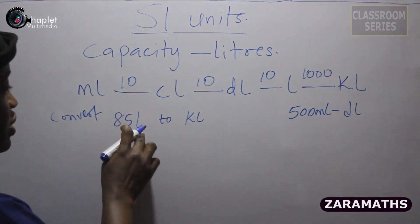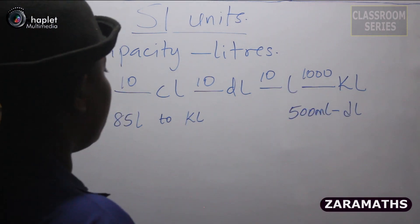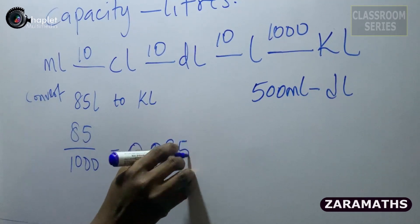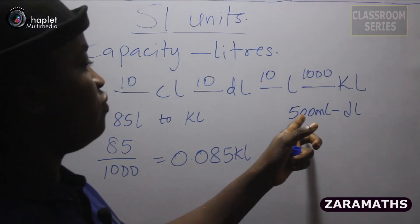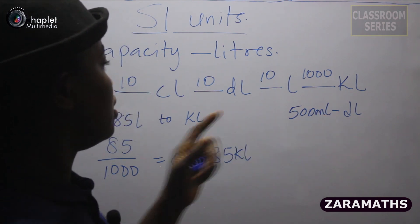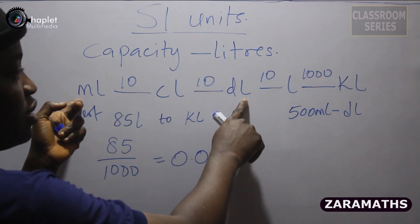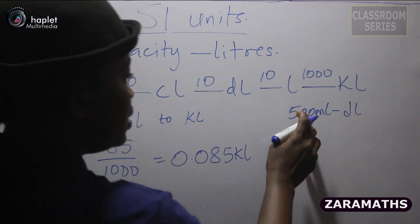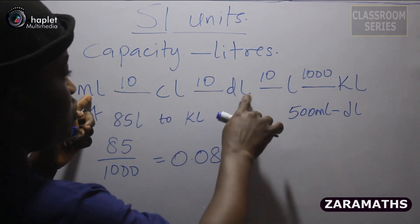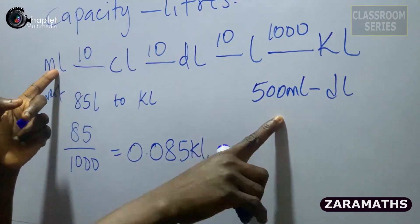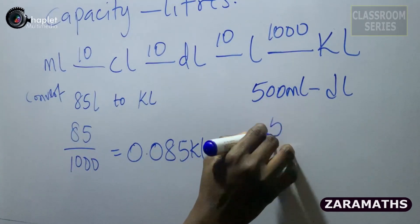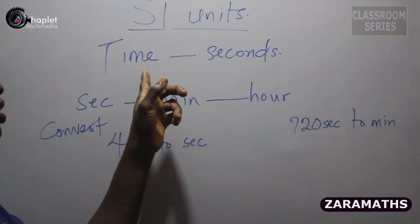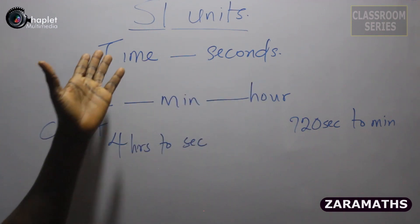Because we are moving forward, we divide. So 85 liters to kiloliters: 85 divided by 1000 gives us 0.085 kiloliters. Another example: 500 milliliters to deciliters. From milliliters to deciliters we are moving forward as well, so we divide. From milliliter to deciliter we have 10 × 10 = 100, so we divide by 100 to give us 5 deciliters.